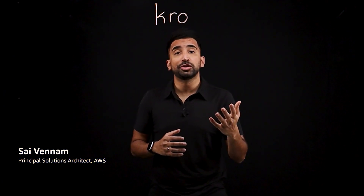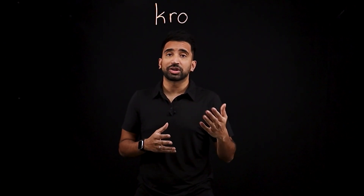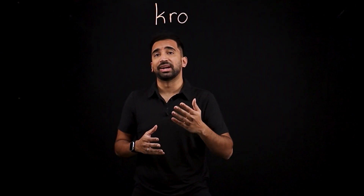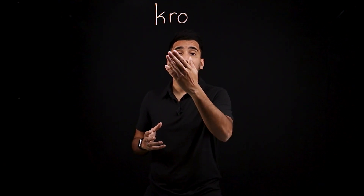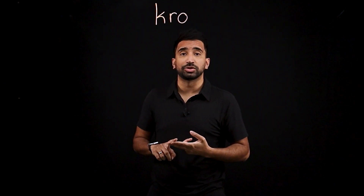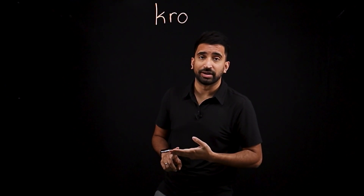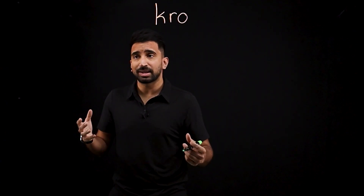Let's talk about Crow, a new experimental open source project from AWS that aims to make it simpler to orchestrate your Kubernetes resources. That's what Crow stands for: Kubernetes Resource Orchestrator. Let's jump right into it with an example.